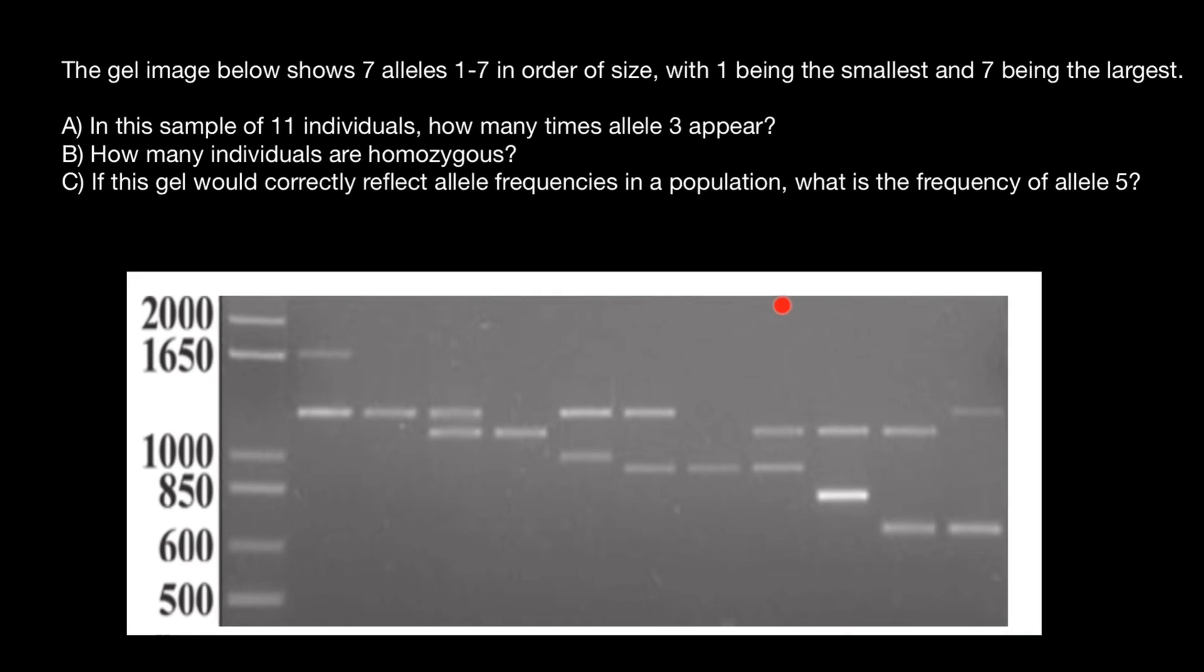Now let's return to our questions. The first question: in this sample of 11 individuals, how many times does allele three appear? This is the reference ladder, and as you see, these are known sizes for each band of this ladder. Here is individual number one, number two, number three, number four, number five, number six, seven, eight, nine, ten, and eleven. We're also told that we have seven alleles in order of size, with one being the smallest and seven being the largest.